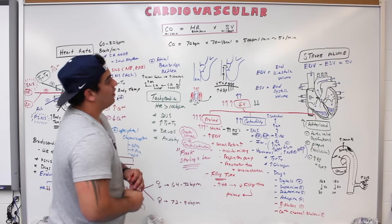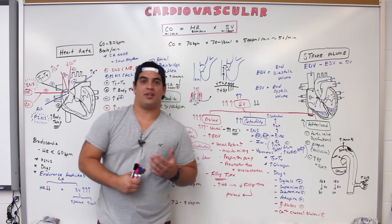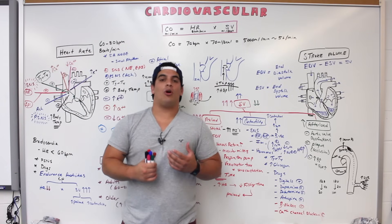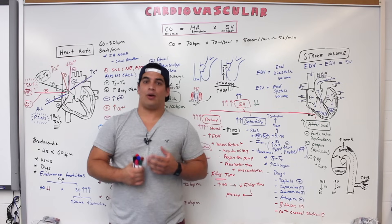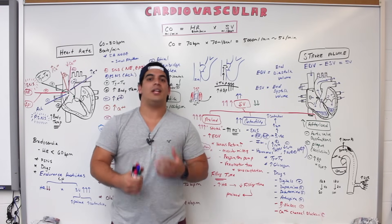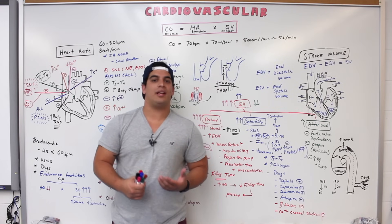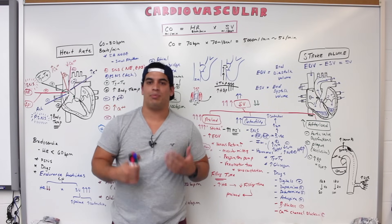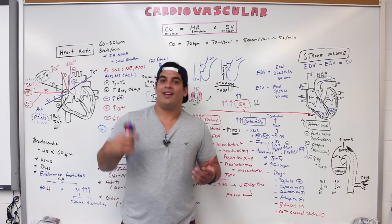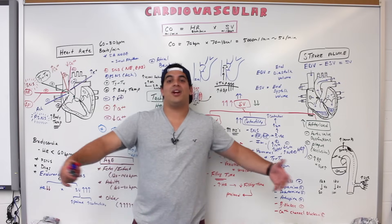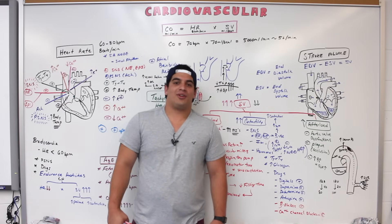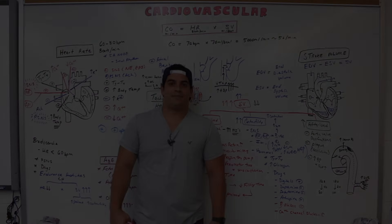That covers everything on cardiac output — we discussed the equation CO = HR × SV, all the regulators of heart rate including the autonomic nervous system, hormones, ions, chemoreceptors, age and sex differences, bradycardia and tachycardia, and stroke volume's three determinants: preload, contractility, and afterload, including Frank-Starling's Law and the Bainbridge reflex.